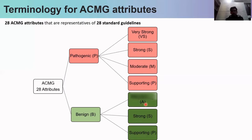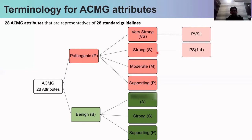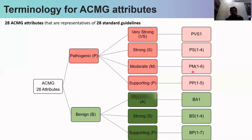For benign, the categories are very strong (denoted by A), strong (S), and supporting (SP). The attributes are named based on their category — for example, PVS1 takes P from pathogenic and VS from very strong, and there is only one such guideline. For strong evidence, there are four guidelines: PS1, PS2, PS3, and PS4. For moderate, there are six guidelines from PM1 to PM6, and for supporting, five guidelines from PP1 to PP5.